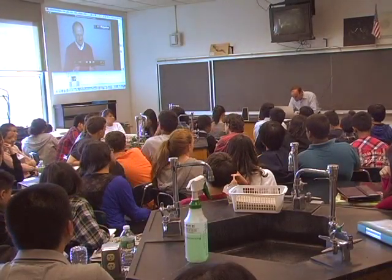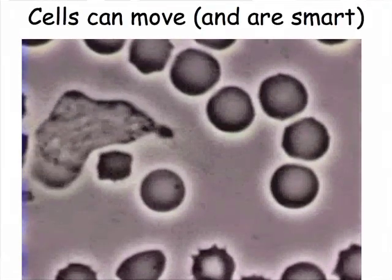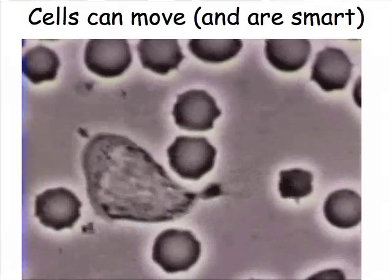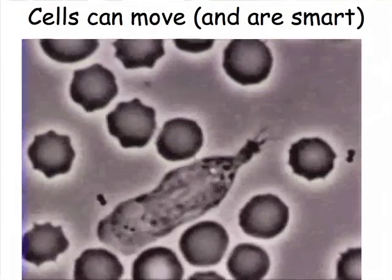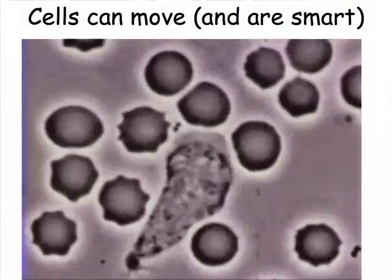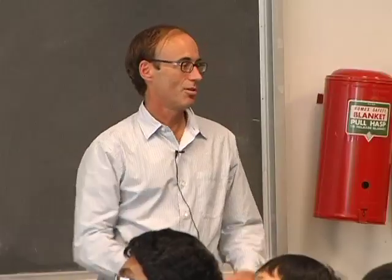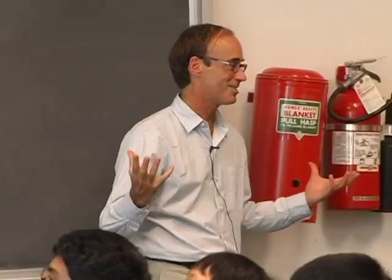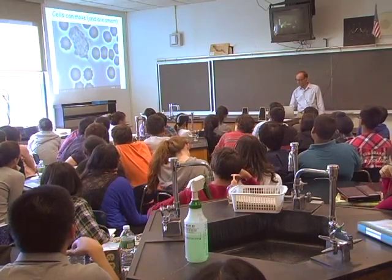Here's one thing: just a cell moving. This is a white blood cell in your body — really amazing. It's moving, and second, it's chasing that little thing in front of it, which is a bacteria. The bacteria is trying to get away, but the cell can not only move, it can sense its location, until eventually it engulfs it. This illustrates the phenomenon of cell movement.